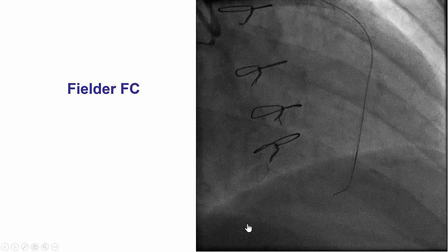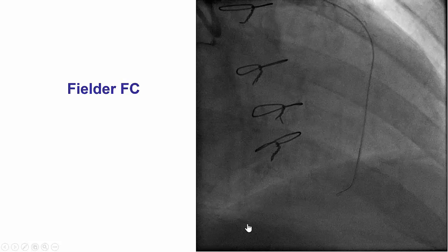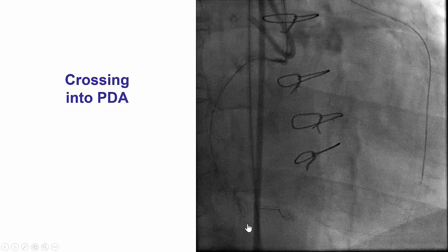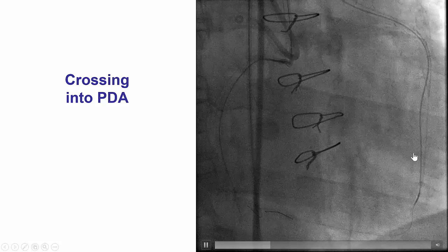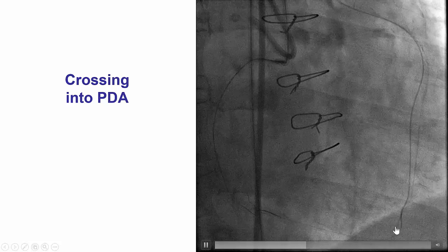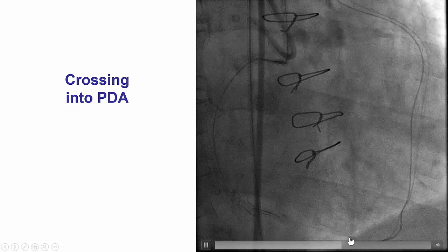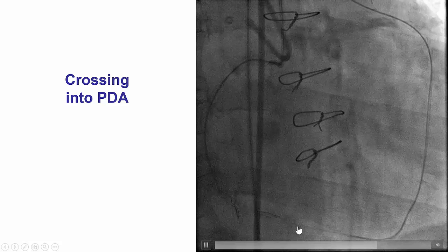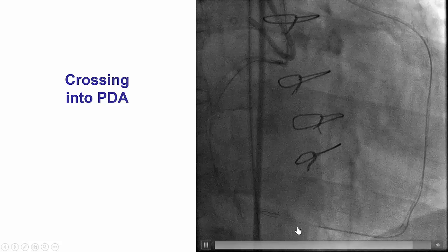After doing that, after several wire attempts with the Sion wire as well as the Fielder FC, we were eventually able to advance the wire into the occluded vessel. The Corsair Pro could then be advanced relatively easily through the collateral into the posterior descending artery, providing a very strong position for retrograde crossing attempts.